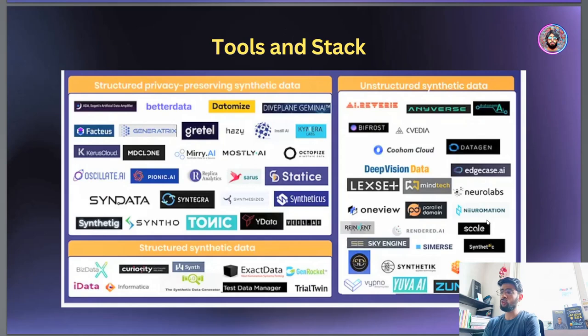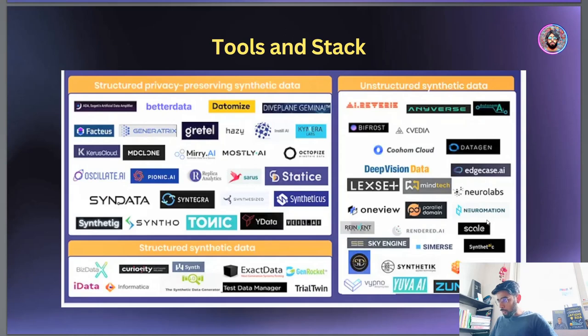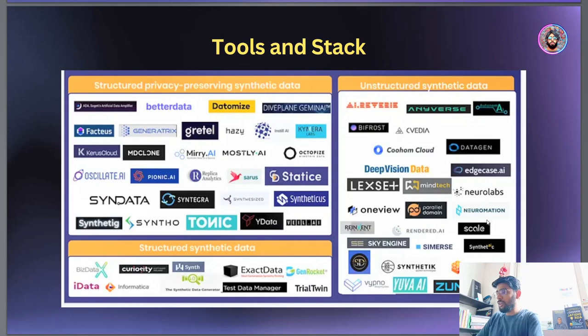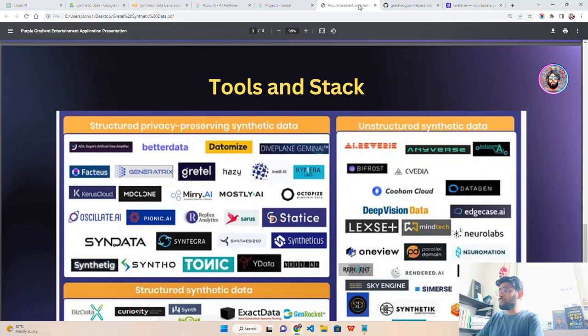Privacy-preserving AI is the way forward, and a lot of big companies are working on it. If you are a data scientist or machine learning engineer and haven't explored PPAI yet, I recommend looking into it. For structured synthetic data, organizations like Jane Street or Informatica also help generate synthetic data. For unstructured data, we have companies like Synthesis AI, Mostly AI, Jumio Labs, and others doing interesting work in this space.